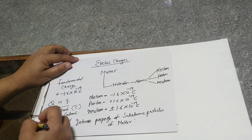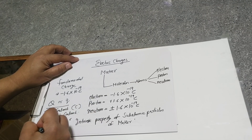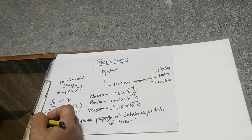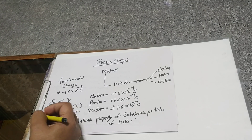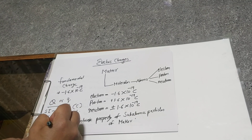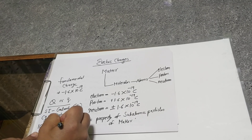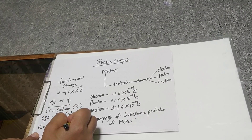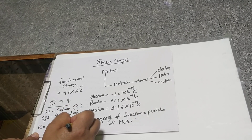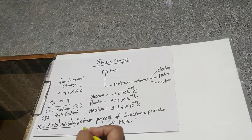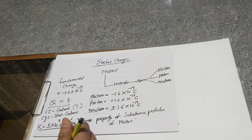We know that 1 coulomb is equal to 3 × 10⁹ stat coulomb. This relation can also be asked in the paper.